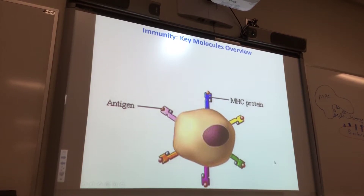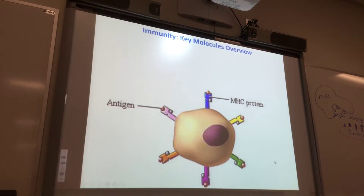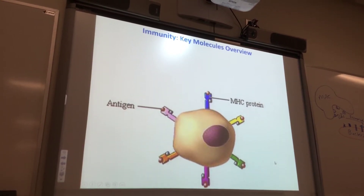I think that's how they first discovered it — they were trying to do transplants and asked why can't we transplant this tissue into this animal, and then found these MHC proteins. You can immunosuppress, but you can only immunosuppress so much.